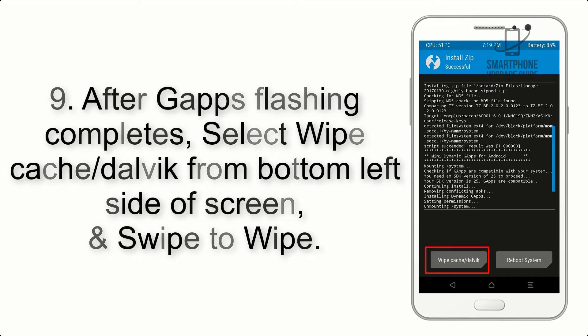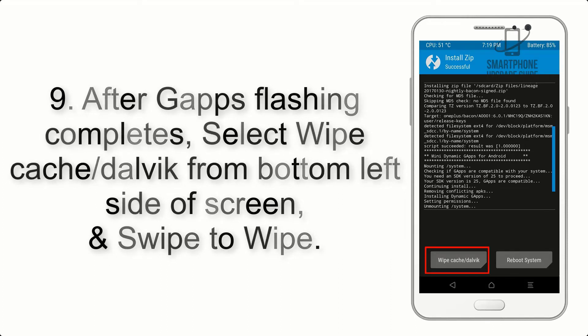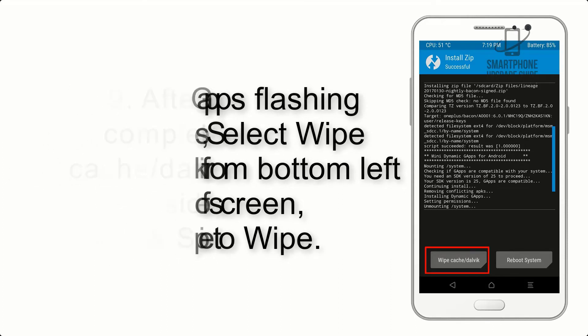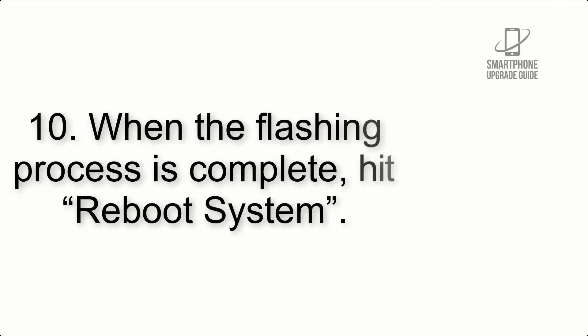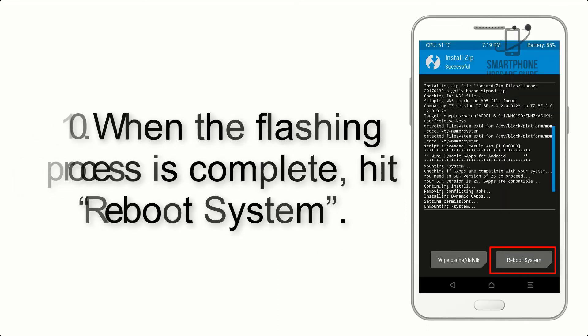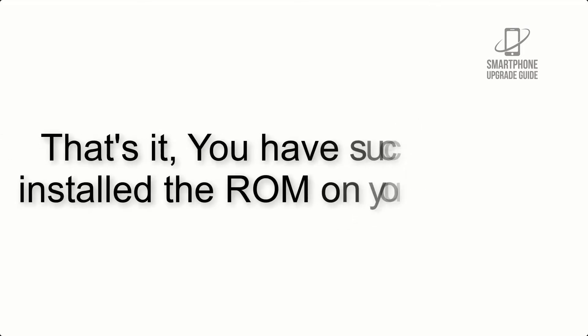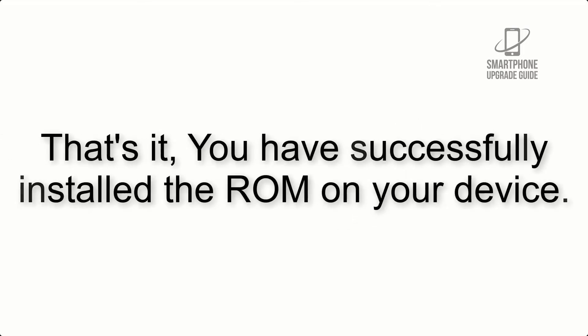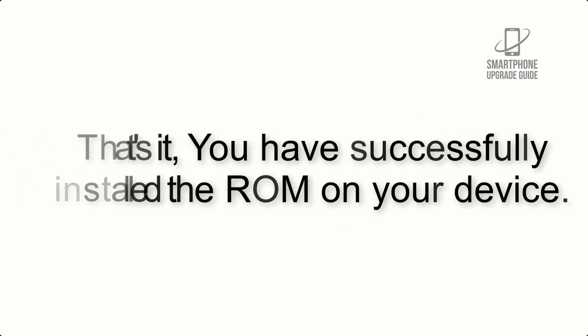Step 9: After GApps flashing completes, select Wipe Cache and Dalvik from the bottom left side of the screen and swipe to wipe. Step 10: When the flashing process is complete, hit Reboot System. That's it — you have successfully installed the ROM on your device.